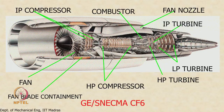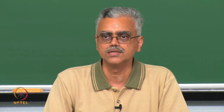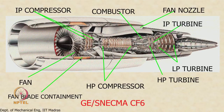The fan blade containment band surrounds the fan blades in the engine nacelle. Its purpose is to contain any fan blade that becomes dislodged due to a catastrophic event such as a bird strike. Because the fan blades are quite large, a loose blade can cause serious damage to the engine, fuselage, cabin, and passengers. Fan blade containment is a mandatory safety feature for all turbofan engines.